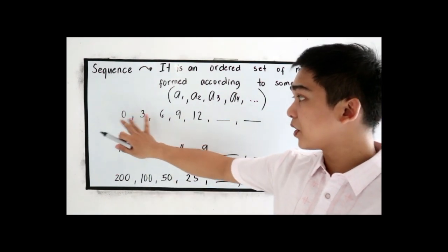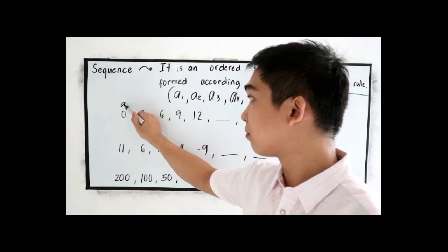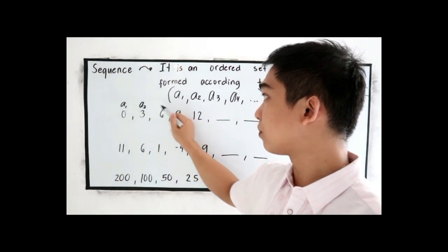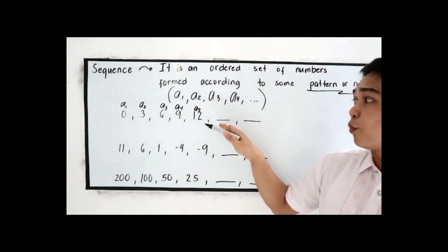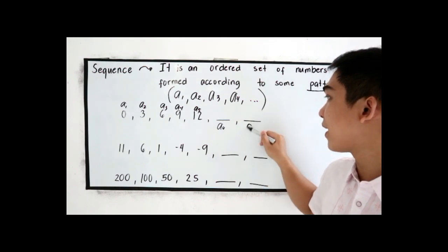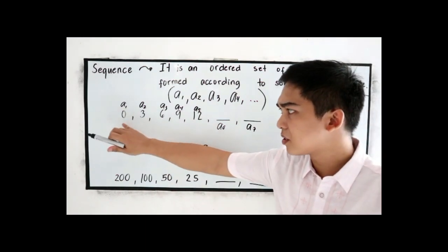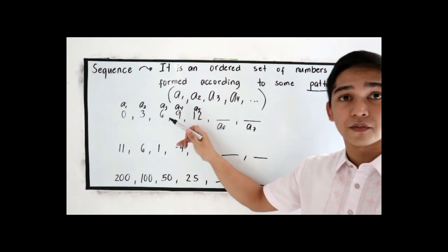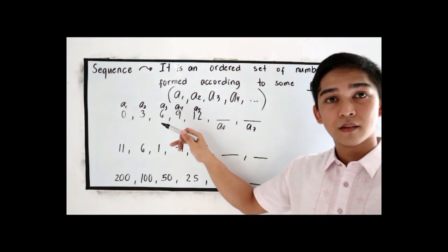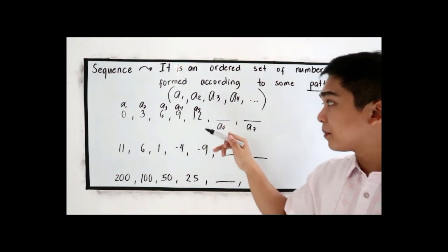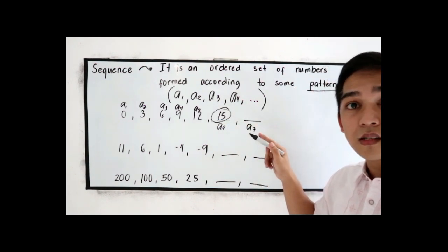Let's say we have 0, 3, 6, 9, 12. So this is our A1, A2, A3, A4, and A5. What will be our A6 and A7? Look at the pattern: 0, 3, 6, 9, 12. The pattern is the multiples of 3. So the next will be 15, and next to 15 is 18.